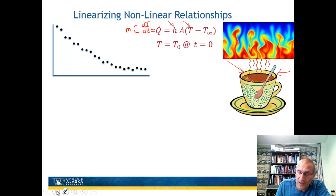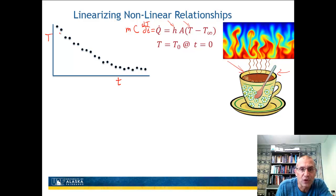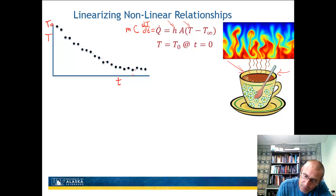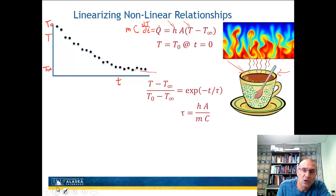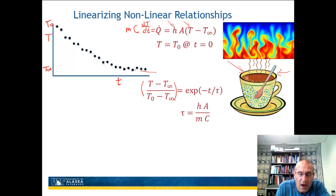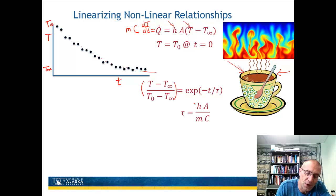If I conduct the experiment and measure temperature as a function of time, initially it cools off fairly quickly, then slower and slower. It starts at T naught and approaches T infinity at large times. Solving the differential equation gives this ratio: T minus T infinity over T naught minus T infinity equals e to the minus t over tau, where tau equals MC over HA. So from this I can get the heat transfer coefficient H.